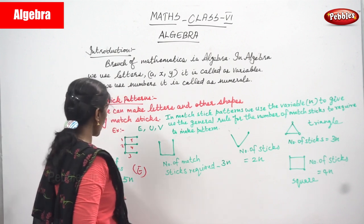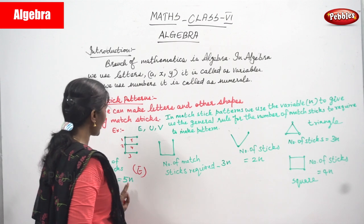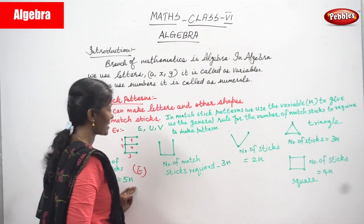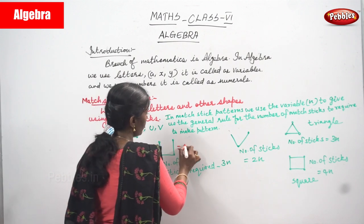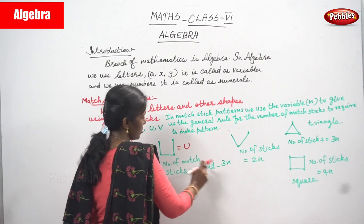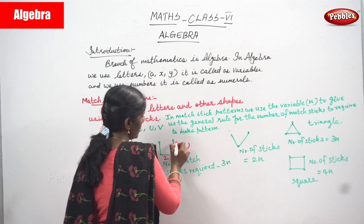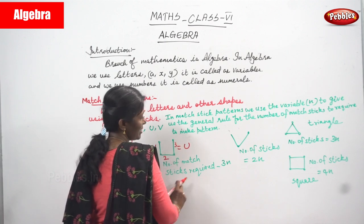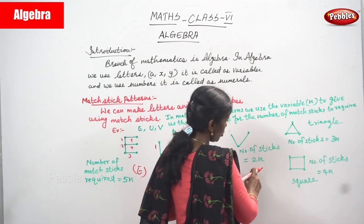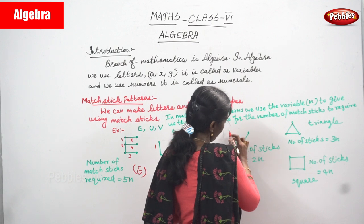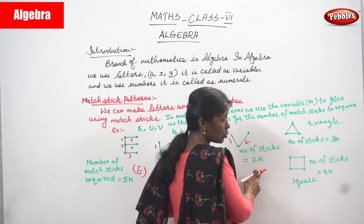For the letter E, the number of matchsticks required is five — 5N means five matchsticks you need. For the letter U, the number of matchsticks required is: one, two, three — so three matchsticks. 3N means three matchsticks. And for another letter, the number of matchsticks required is two — 2N means two matchsticks.